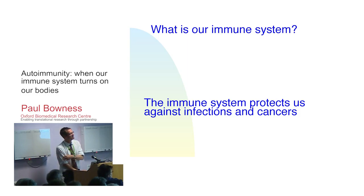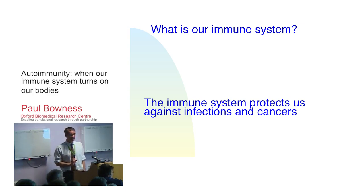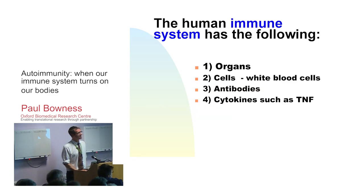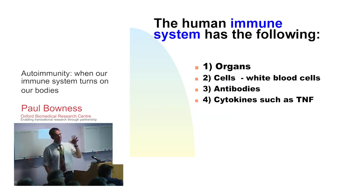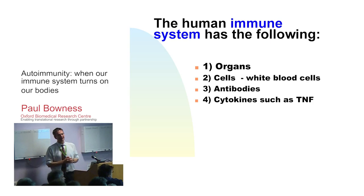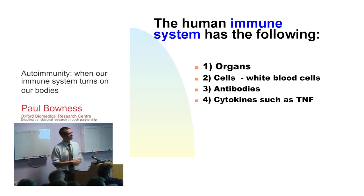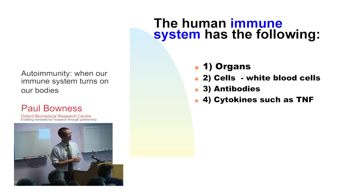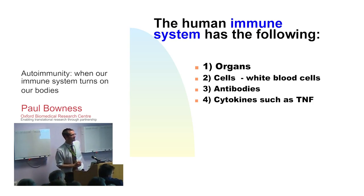So what is our immune system? It is the parts of our body designed to protect us against particularly infections and cancers. We can split it up at the organ level, the cell level, and we can now understand it at the molecular level. I'm going to introduce you to what antibodies are, because they're important in many autoimmune diseases, and also to a group of proteins called cytokines, one of which is called TNF. That's very important because we now use treatments against TNF in a whole variety of diseases.